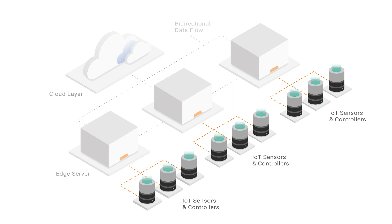Let's start with the edge. When it comes to computing, the term edge often refers to an actual location. It's the place where a local network ends — its edge — and an off-site network begins. Edge computing collects and processes information from on-site sensors and devices close to where that information is being created, and helps to communicate it both on-site and off.